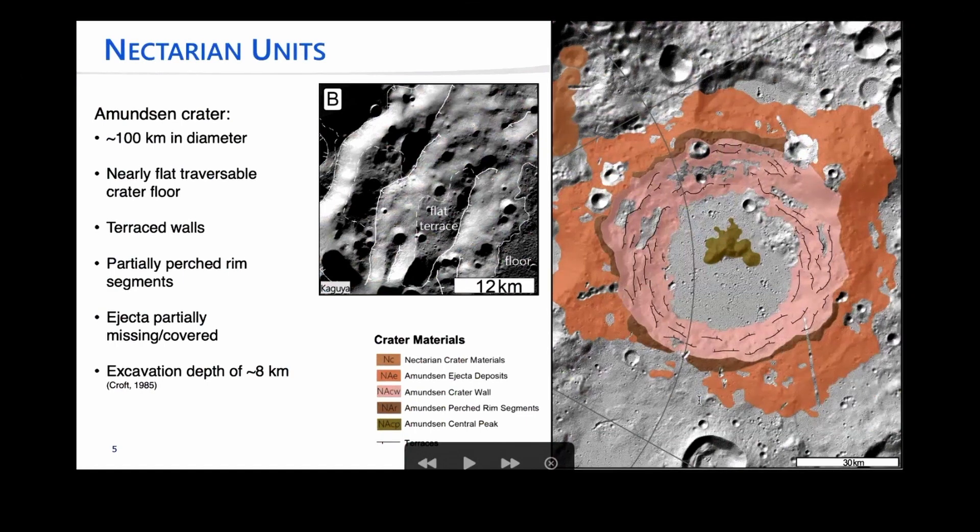When we get started mapping the Nectarian units, they're overlying the pre-Nectarian SPA remnants. Here's where we're going to have the Amundsen crater, which is differentiated into units of ejecta deposits in the more orangey color. The crater wall, the central peak, the perched rim segments in the darker brown. And then also Nectarian, over there in the upper right corner, are other Nectarian crater materials not associated with the Amundsen crater. This material from previous work likely has an excavation depth of about eight kilometers. The ejecta is partially missing around some sectors of the crater.